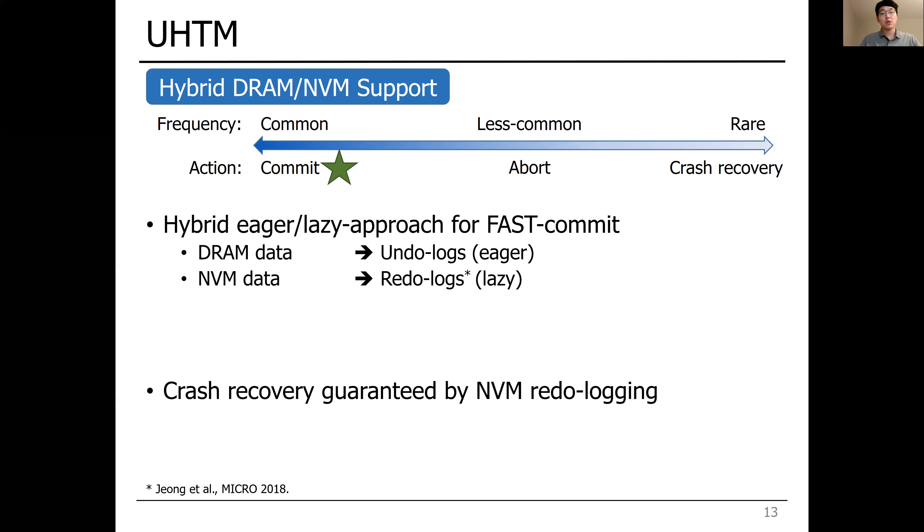While the commit of DRAM completes fast with the eager approach, which overwrites the original data within transactions, NVM commit becomes faster with the lazy approach since it places costly cache flushes out of the critical path. And UHTM guarantees crash consistency with NVM redo-logging.